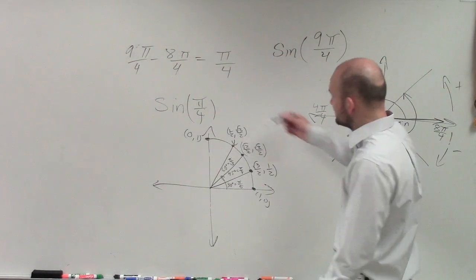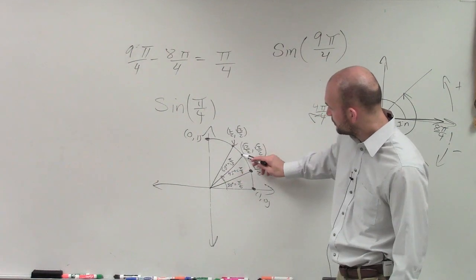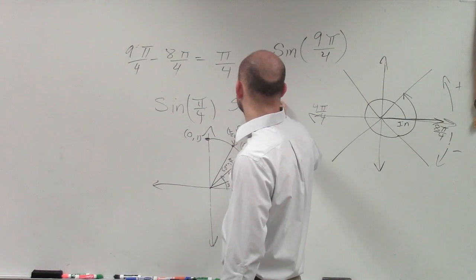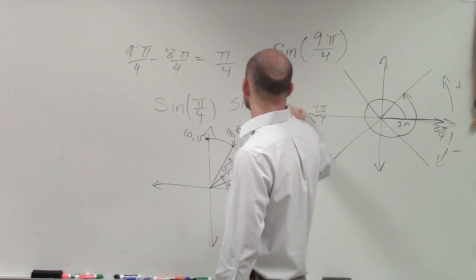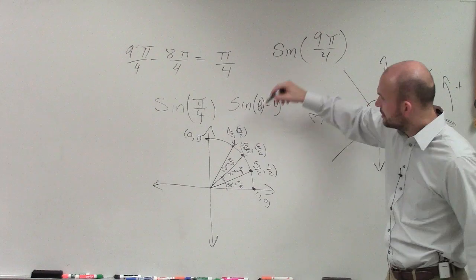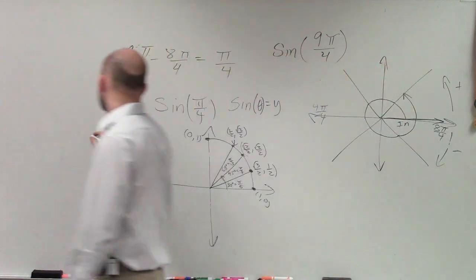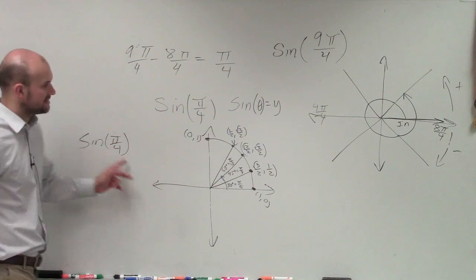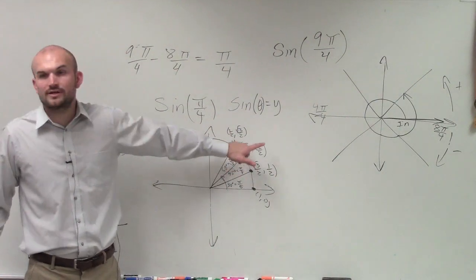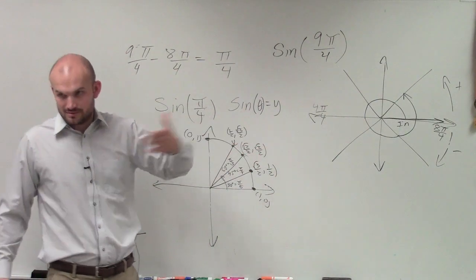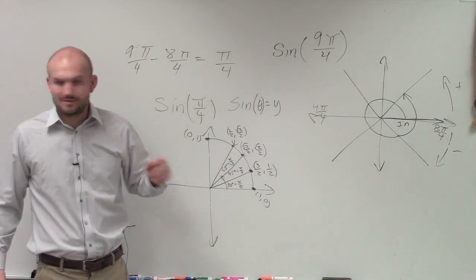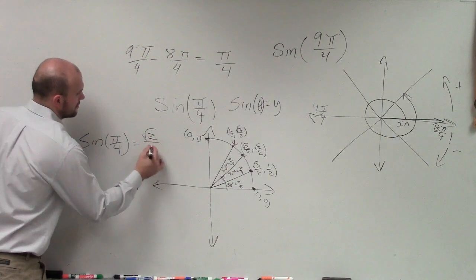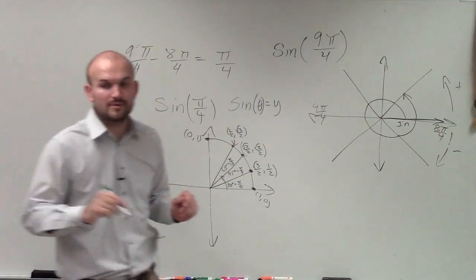We already know sine of π over 4. Remember, the sine of an angle equals your y-coordinate. So sine of π over 4 is going to represent the y-coordinate of that point. The y-coordinate of π over 4 is √2/2.